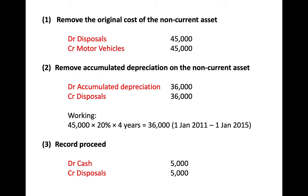The last step is to record the proceeds: debit cash £5,000 — cash in — and credit the disposals account.